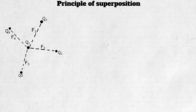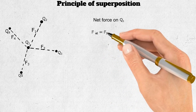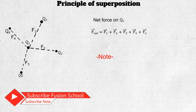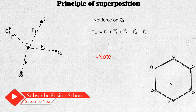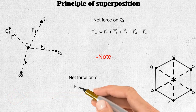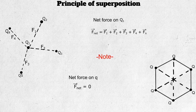Principle of superposition: if two or more charges are present in a region, the net force on any charge equals the vector addition of all the forces exerted by the different charges. Net force on q1 equals F₁ + F₂ + F₃ + F₄ (vector sum). If symmetrical charges are placed at different corners of a regular polygon, then the force on a charge placed at the center will be zero, regardless of what kind of charge it is.